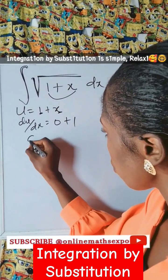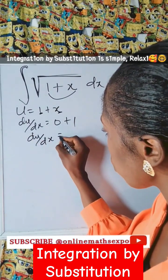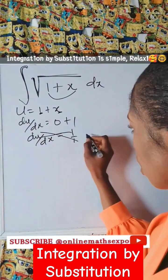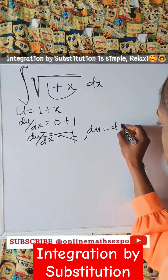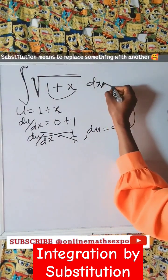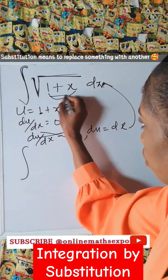So we have du/dx is equal to one. Over one, you cross multiply, so I have du is equal to dx. Replace it here so that we have integral of—this is u—so du.